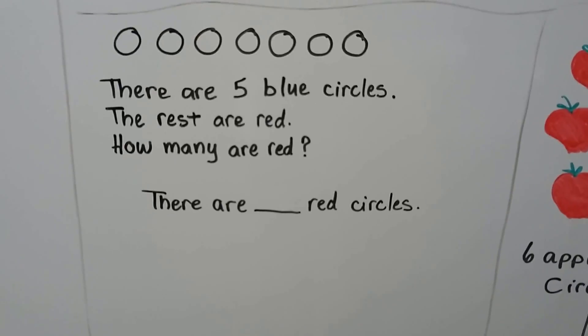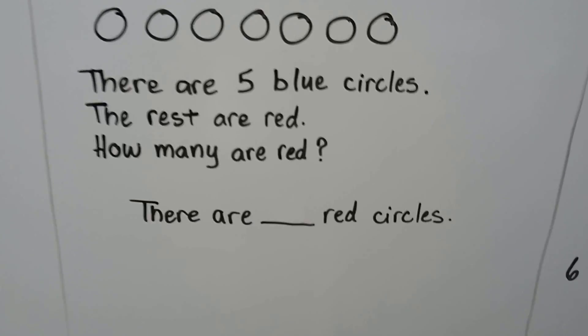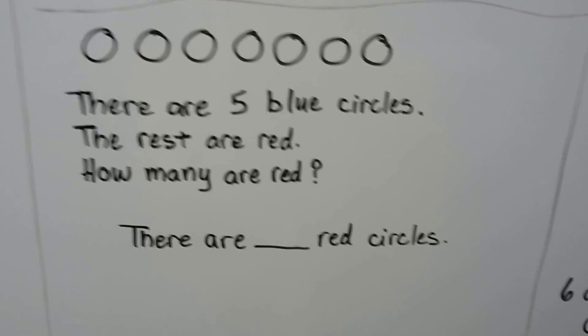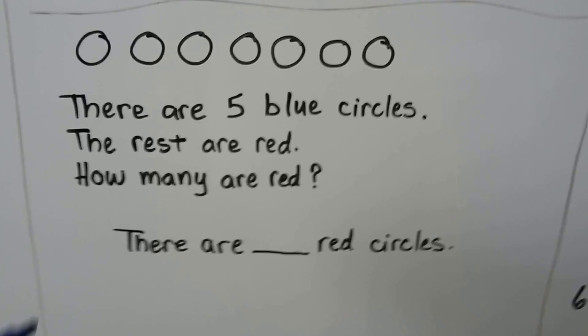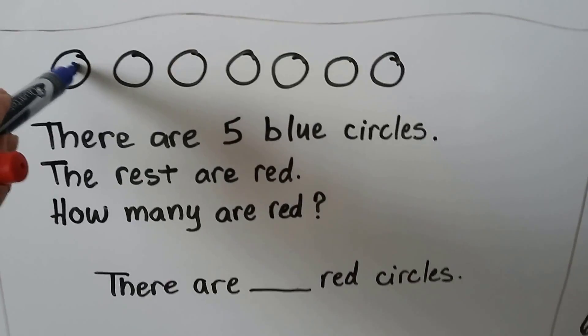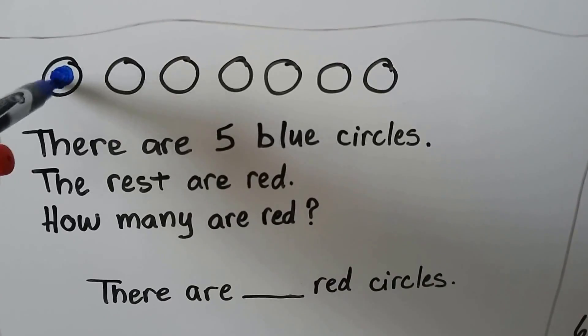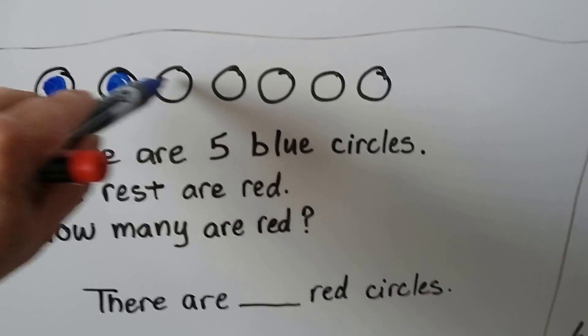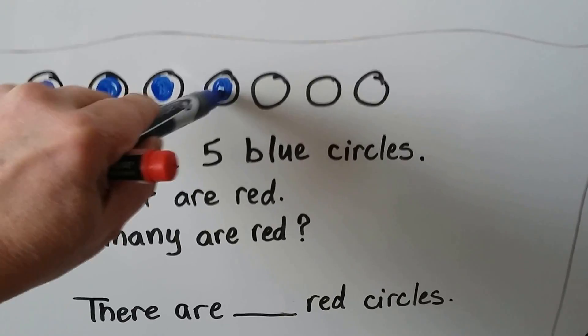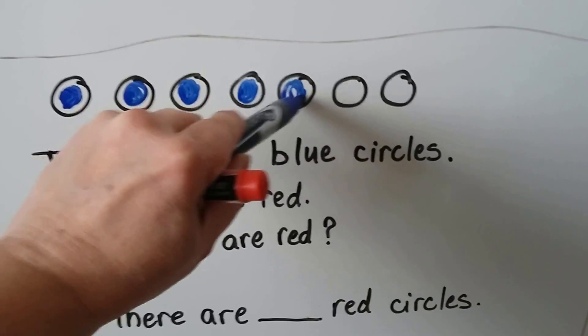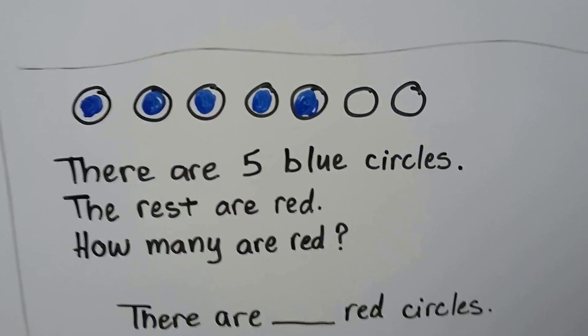Here it says there are five blue circles. The rest are red. How many are red? So it wants us to color them in. So if there's five blue circles, we can color five blue circles. One, two, three, four, five. Now we have five blue circles.